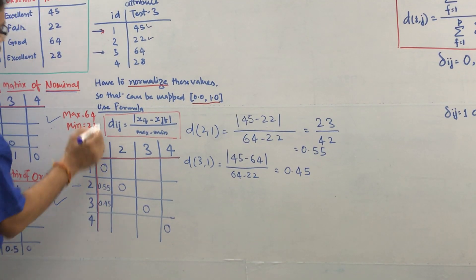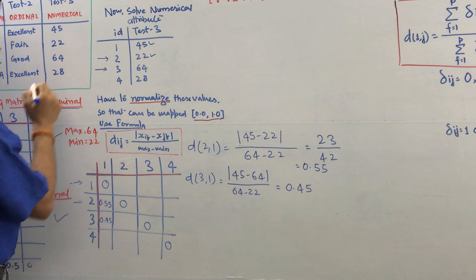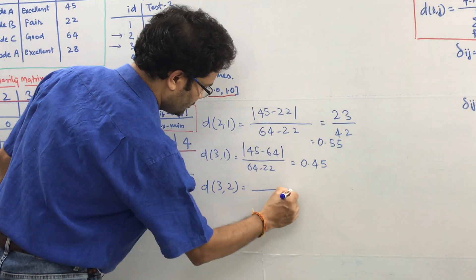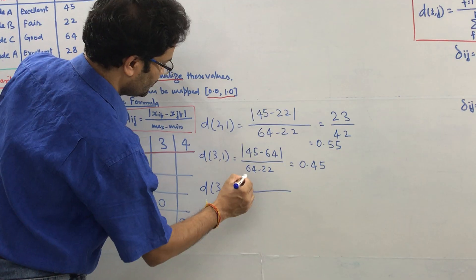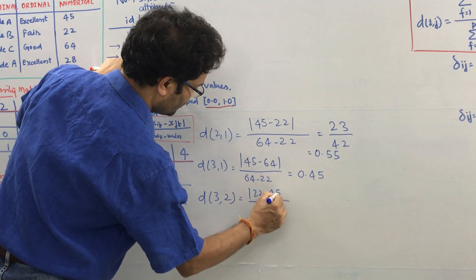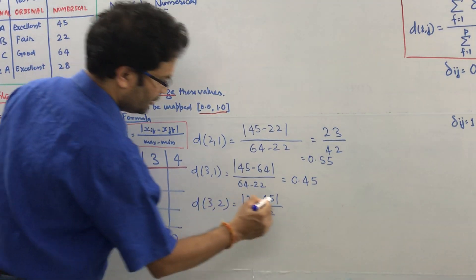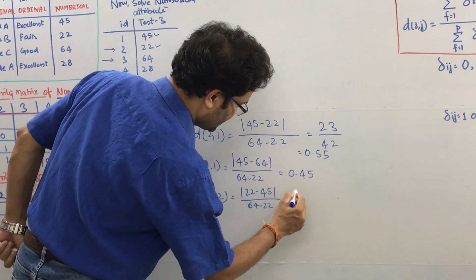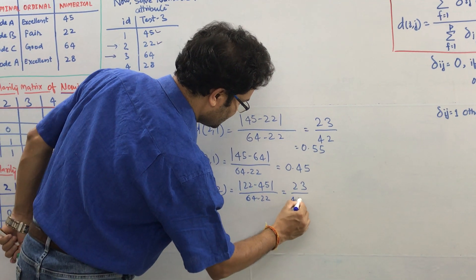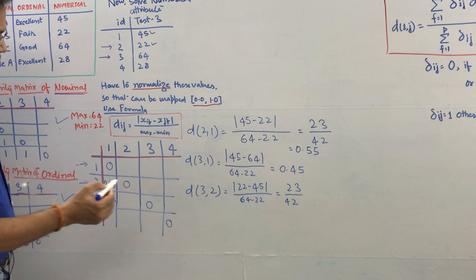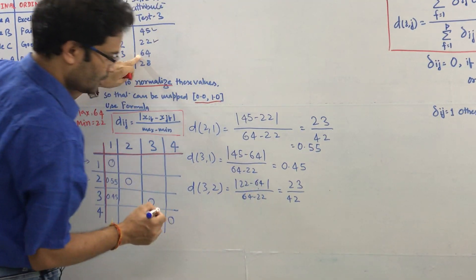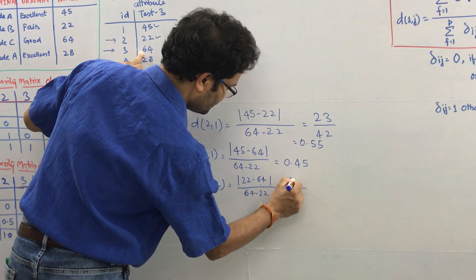Now calculate this part 3-2. This time this is the i, this is the j. 3-2 means 64-22 right. 64-22, and anyway you can take it because of modulus, no problem. And the same 64-22. If you calculate, the value is 0.45. This is 1.